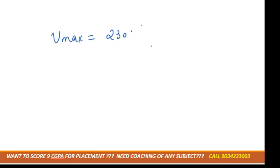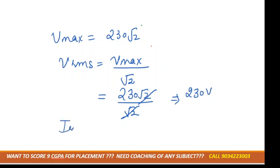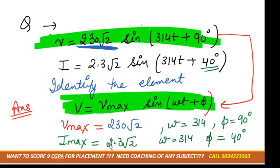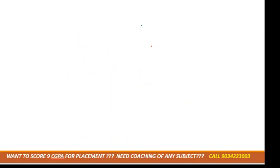For calculations we need RMS values. V-max is 230√2, so v-rms equals 230√2 divided by √2, giving 230 volts. Similarly, i-max is 2.3√2, so i-rms equals 2.3 amperes. From here we can calculate the impedance Z.